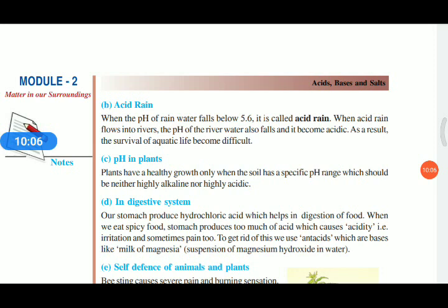Next one, acid rain. When the pH of rainwater falls below 5.6, it is called acid rain. In our atmosphere contains carbon dioxide, nitrogen dioxide and sulfur dioxide. When it mixes with water, it forms carbonic acid, sulfuric acid and nitric acid.